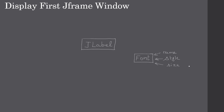For example, the name we can say Verdana, style we can say plain, bold, or italic, and then specify the font size — 12, 14, 28, like that. We can actually create borders using a BorderFactory. There are various methods available from BorderFactory, so you can call those methods to create a specific border.